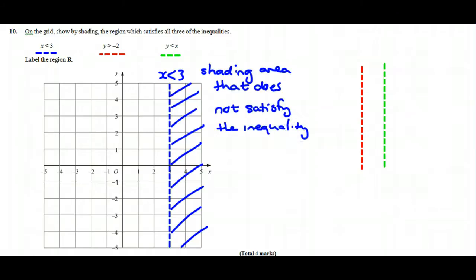If we move on to the next one then, y is greater than negative 2. So first of all, I'm going to identify y equals negative 2, which is a horizontal line where all the y-coordinates of these points are negative 2. It goes through the y-axis at negative 2.